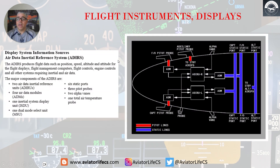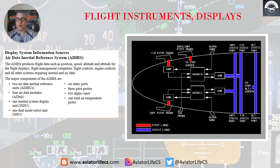The AirData Inertial Reference System produces flight data such as position, speed, altitude, and attitude for the flight displays, the flight management computers, flight controls, engine controls, and all other systems requiring inertial and air data. The major components are — and there are a couple of them you are not going to see in the diagram here — we are going to talk about them in the next slide.